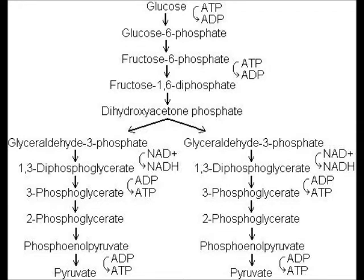Lactate formation begins in the cytoplasm under the anaerobic, or oxygen-independent, metabolic pathway called glycolysis or glycogenolysis. Glycolysis refers to glucose catabolism and contains 10 reactions. Glycogenolysis refers to glycogen catabolism, which bypasses the first reaction and shares the remaining nine. Both end in the formation of two molecules of pyruvate.